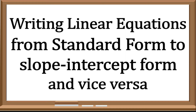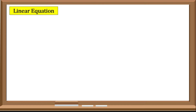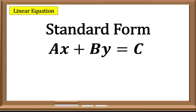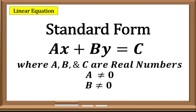As we all know, an equation is said to be a linear equation in two variables when it is written in the standard form of Ax plus By equals C, where A, B, and C are real numbers. A is the numerical coefficient of x, which should not be equal to 0, and B is the numerical coefficient of y, which is also not equal to 0.